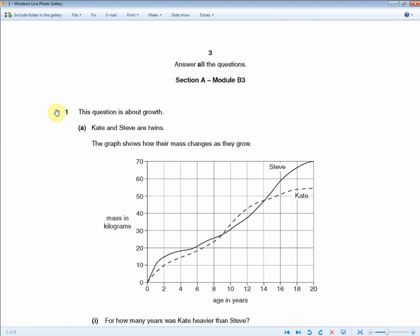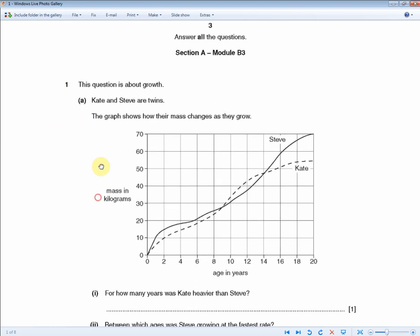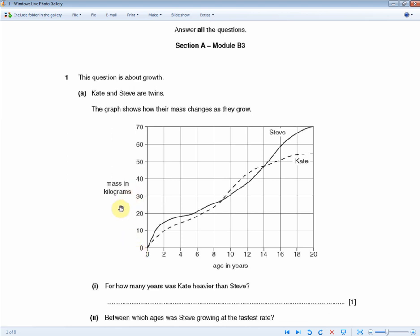So the question reads, this question is about growth. Kate and Steve are twins. The graph shows how their mass changes as they grow. So as can be seen from the graph, mass in kilograms on the y-axis, age in years on the x-axis, and Kate is the dotted line and Steve is the solid line.